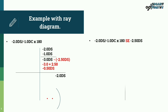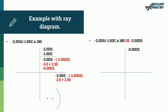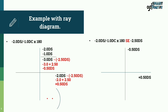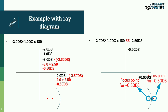In the horizontal meridian: minus 2 minus (minus 2.5) equals plus 0.5 diopter remaining. So plus 0.5 diopter is left in the horizontal meridian. Now if we draw a ray diagram showing how the light rays are focusing in front of or behind the retina: the vertical meridian is focusing with minus 0.5 diopter spherical, and the horizontal meridian is focusing with plus 0.5 diopter spherical.